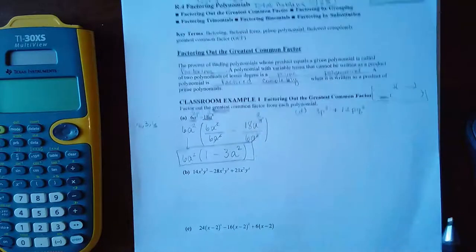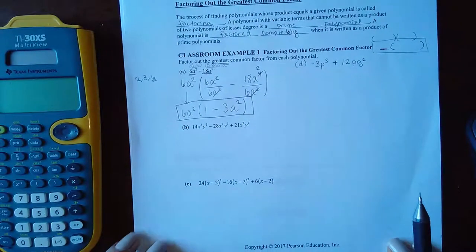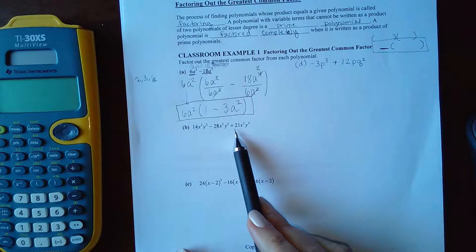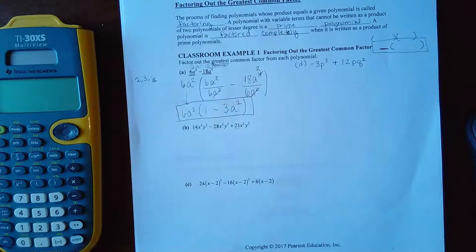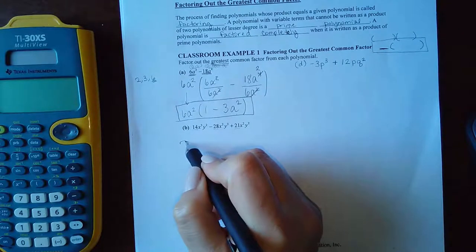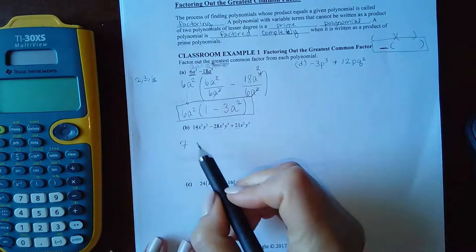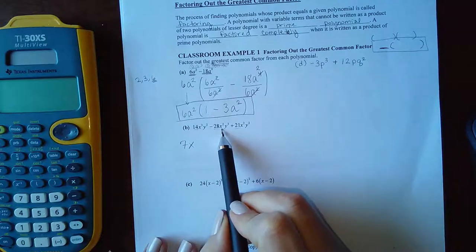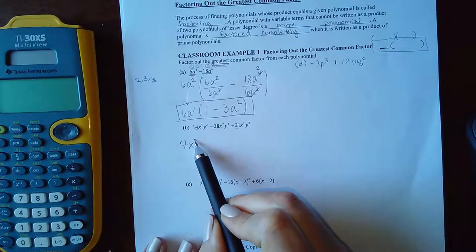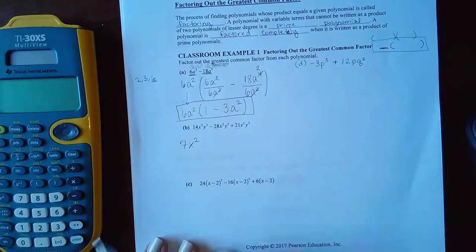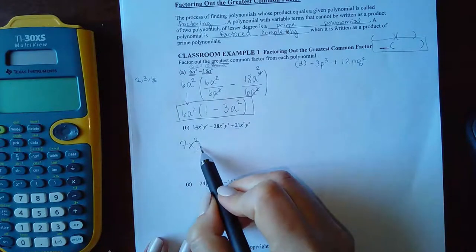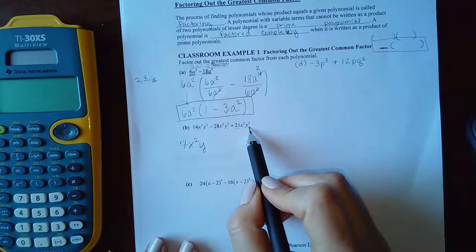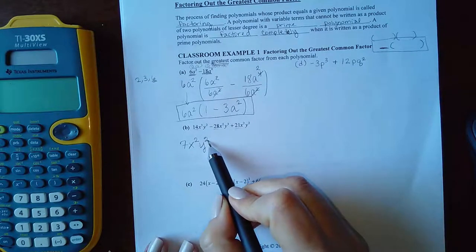Let's move on to the next part here. So what do all three of these numbers have in common? They can all be divided by seven. They all have an X, but this one has three of them, two of them, and two of them. So the most I can take out is two. They all have a Y. This one has two, this term has three, and that term has two. So the most I can take out is two.